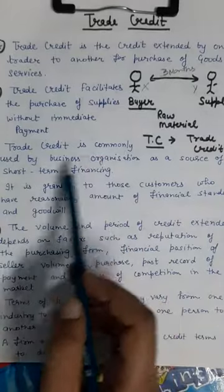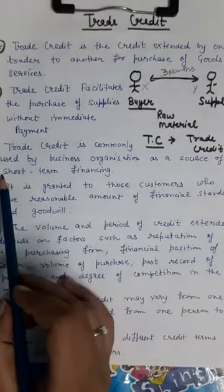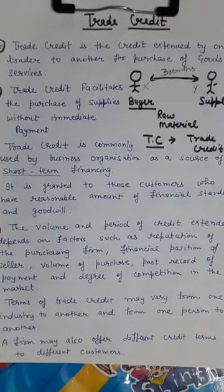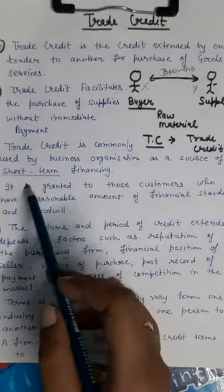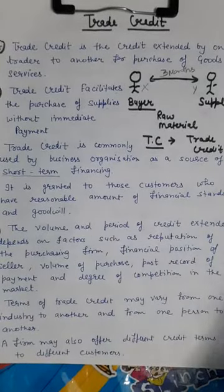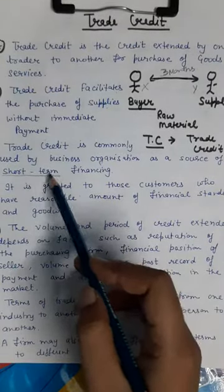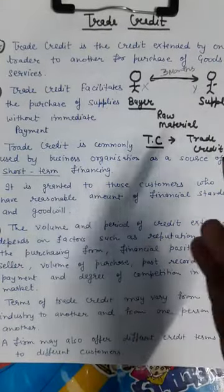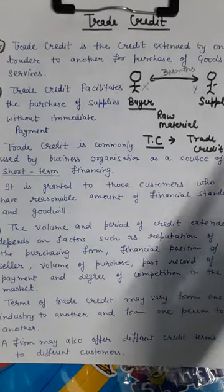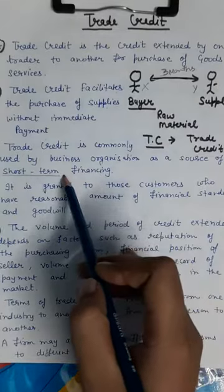Trade credit is commonly used by business organizations as a source of short-term financing. The trade credit facility is only for the short term — meaning less than one year, such as 2 months, 3 months, or 4 months. Generally, this facility is short-term in nature.